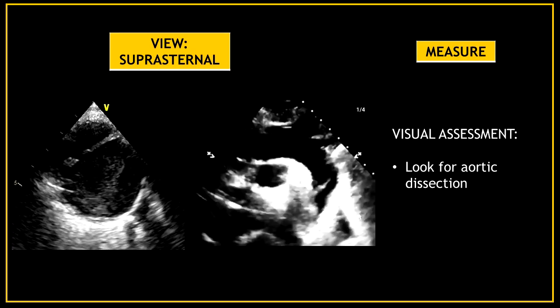This is also a very important view to look for any abnormalities of the aorta. During the visual assessment, look for any aortic dissection. In this image you can see an aortic dissection flap on the descending aorta.